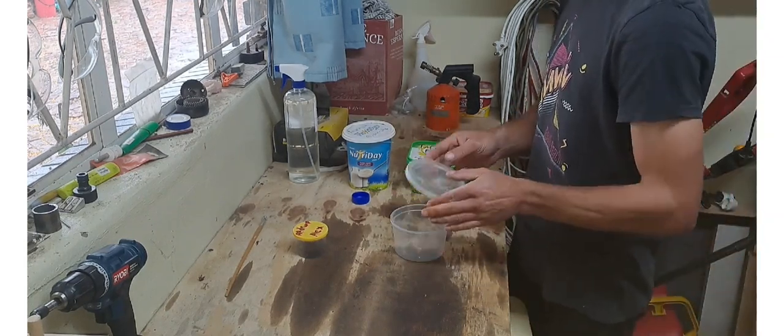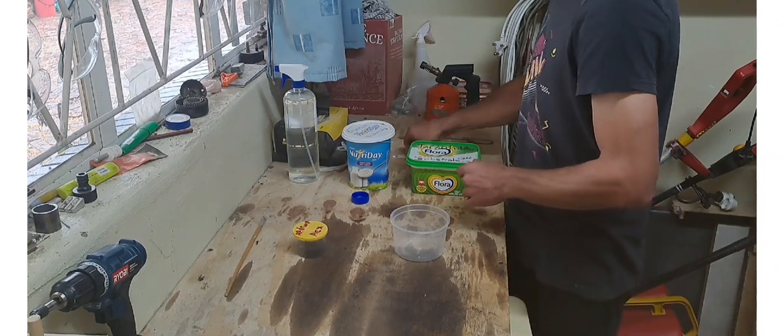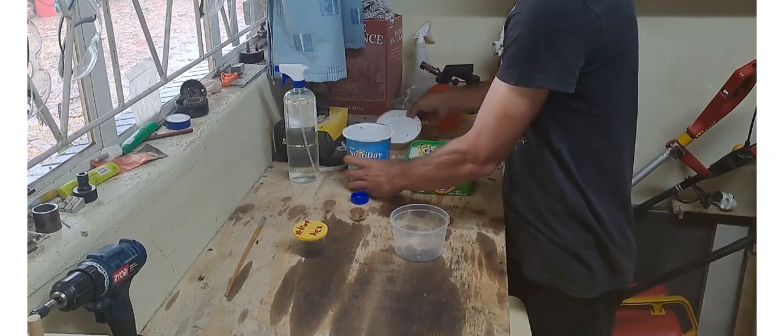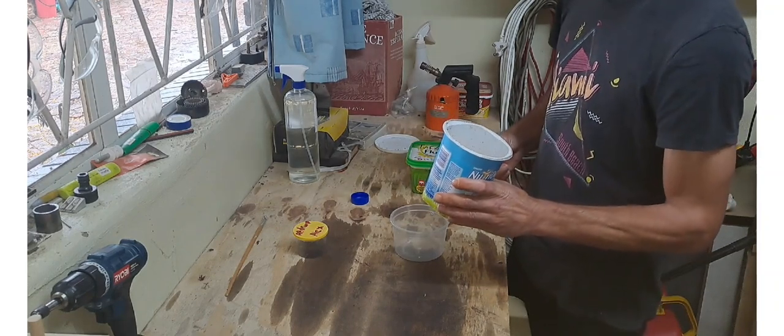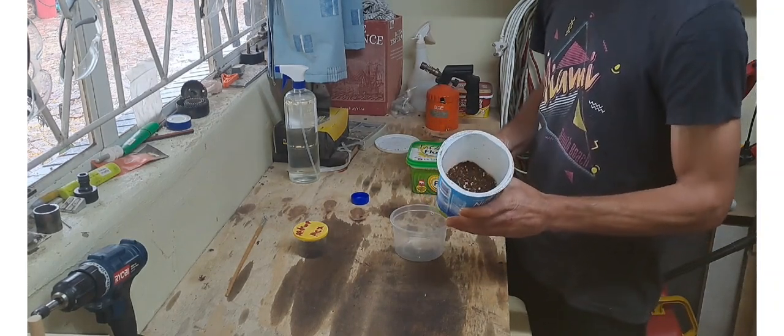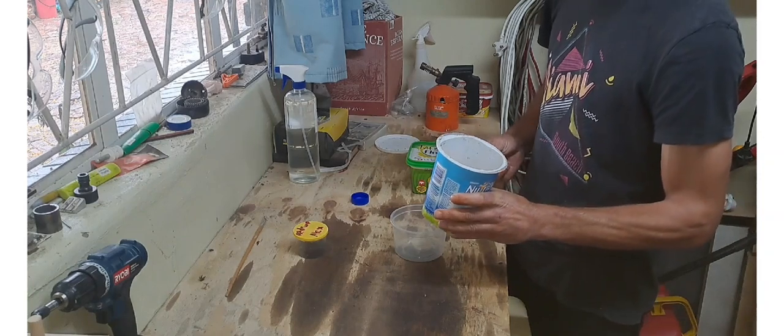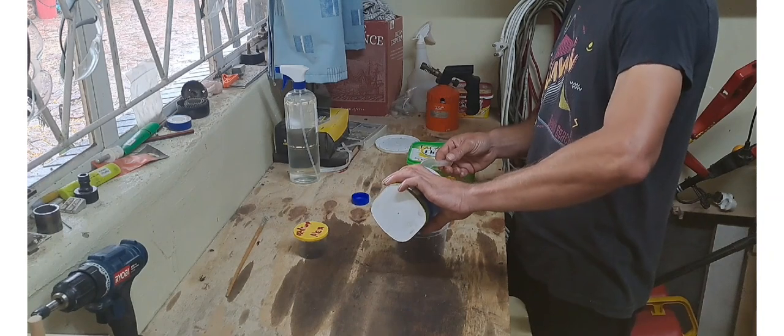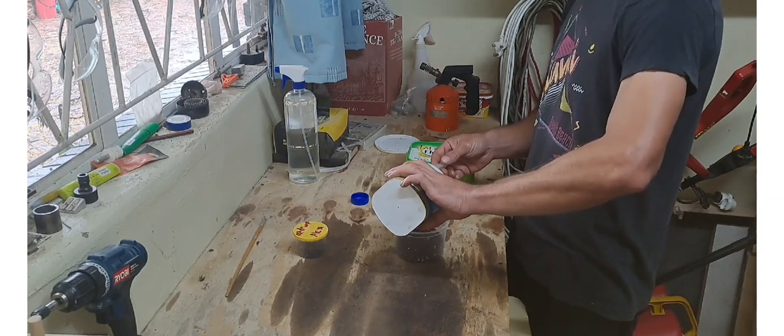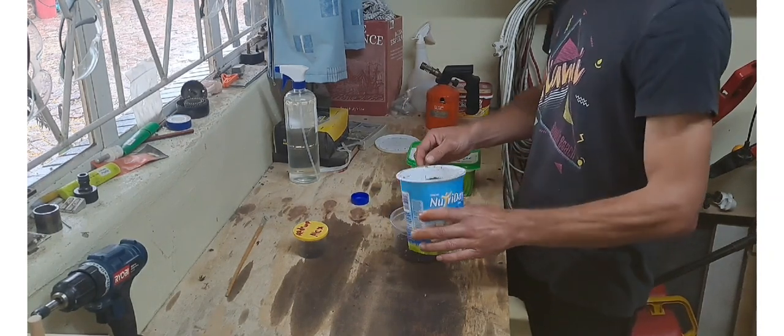So next I'm gonna put in the substrate. So this is just a mixture of topsoil, peat moss, and vermiculite. That absorbs the feces and prevents mold.